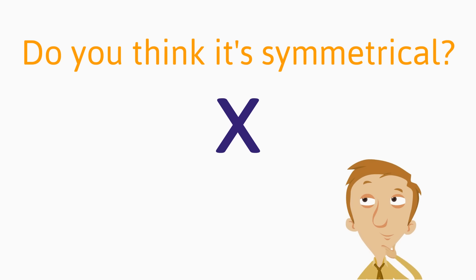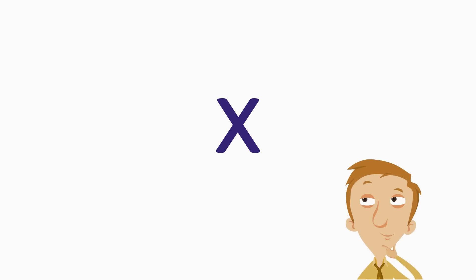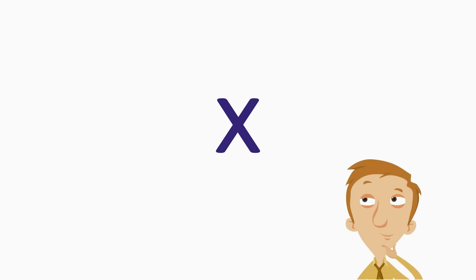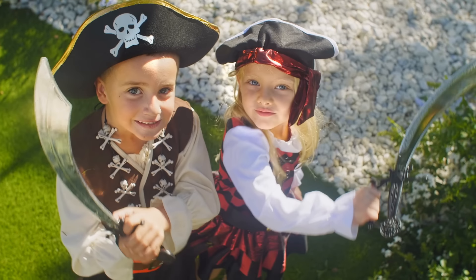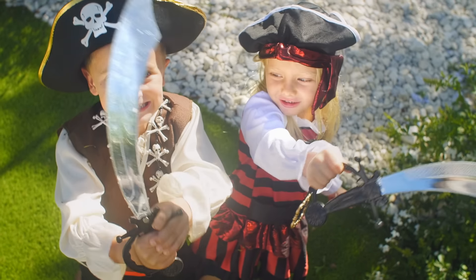Is the letter X symmetrical? Yes, it is. We can try a vertical line of symmetry first — do both sides match? Yeah, they match. But here's the cool thing — we can try a horizontal line of symmetry too. Both sides match! That means the letter X has two lines of symmetry. Some pictures, letters, and shapes have more than one line of symmetry.